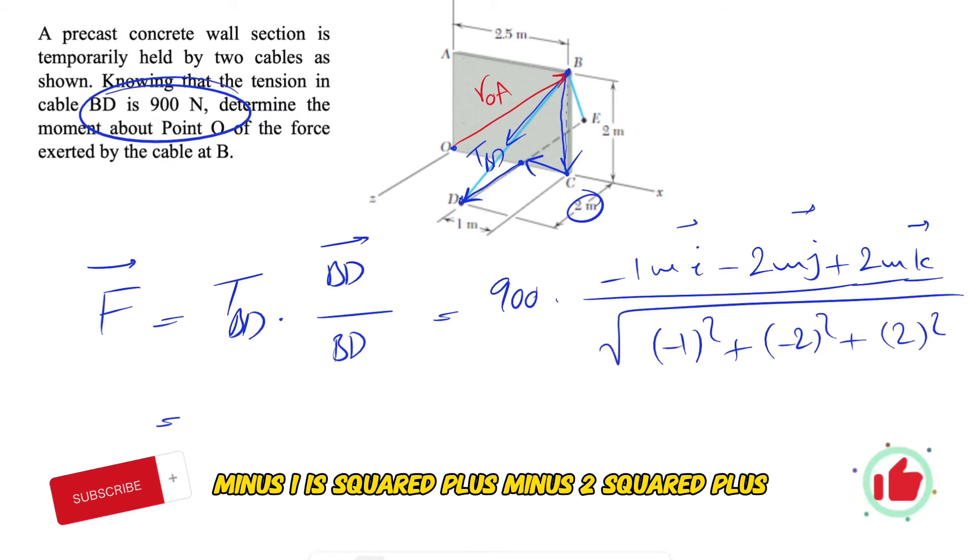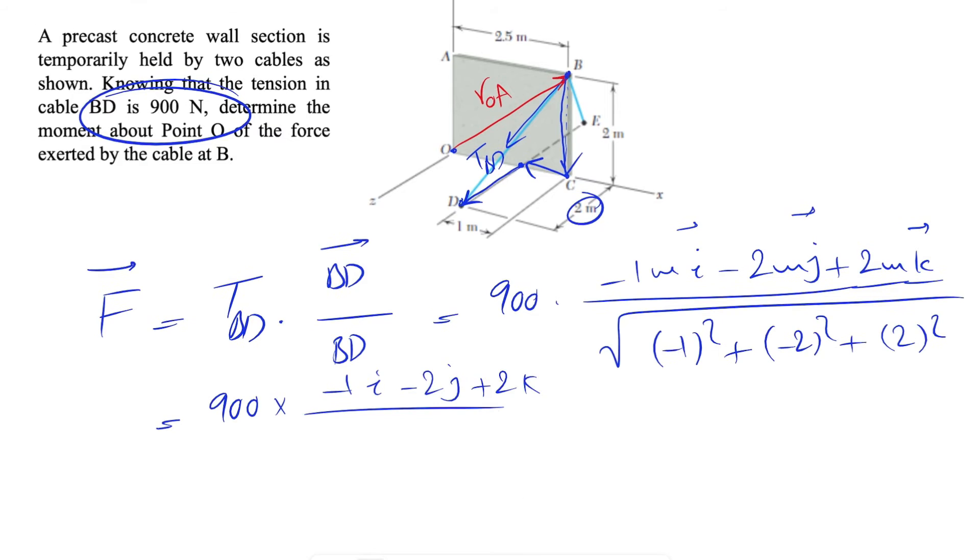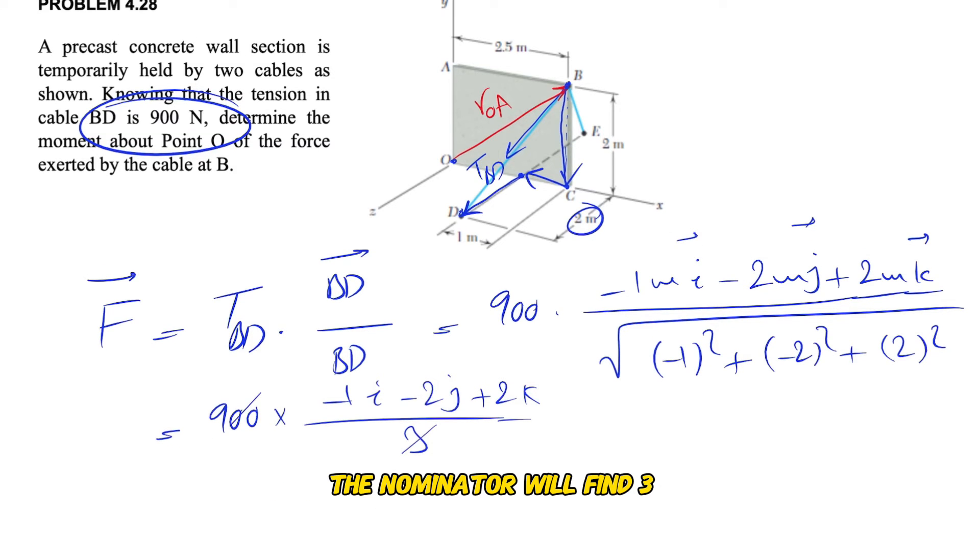The square root of minus 1 squared plus minus 2 squared plus 2 squared. From here we can find F in vector form, which will be 900 times (-1i - 2j + 2k). If we calculate the denominator, we'll find 3, which is the square root of 4 plus 4 plus 1, which equals 9.